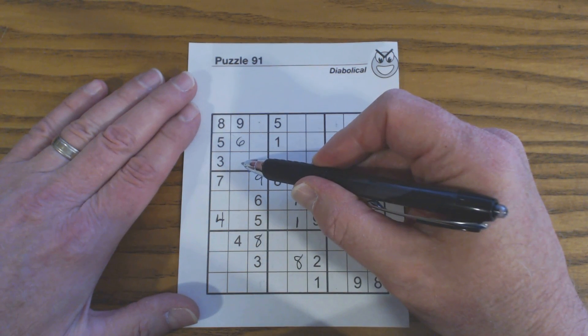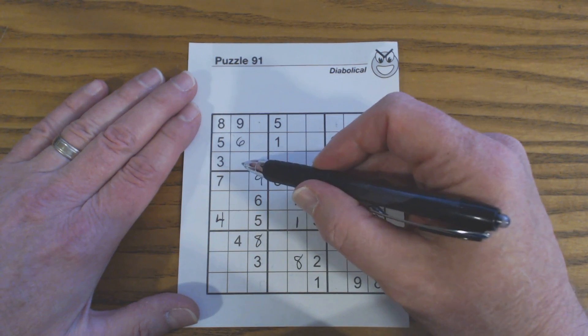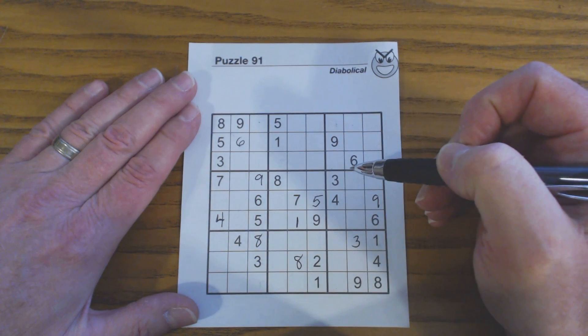Therefore, this can only be 2 or 7. Because it's a loner cell, we can get more information from it.